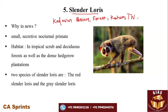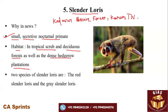The Slender Loris is a nocturnal primate — a very small and secretive species that is active at nighttime. Its most prominent feature is a pair of two large, closely set brown eyes. It survives in tropical deciduous forests as well as dense hedge growth plantations in Southern India.